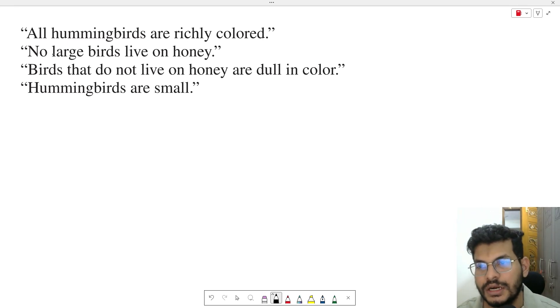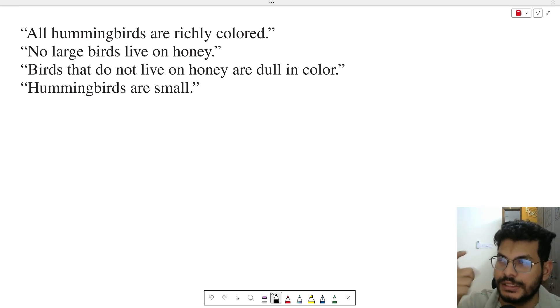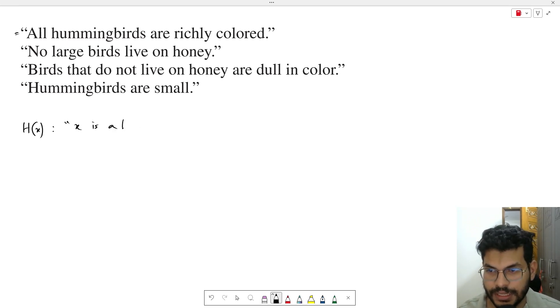Now this is a question for you. All hummingbirds are richly colored. We need to convert each sentence using universal or existential quantification. Let's define the predicates. H of X means X is a hummingbird, and C of X means X is richly colored.